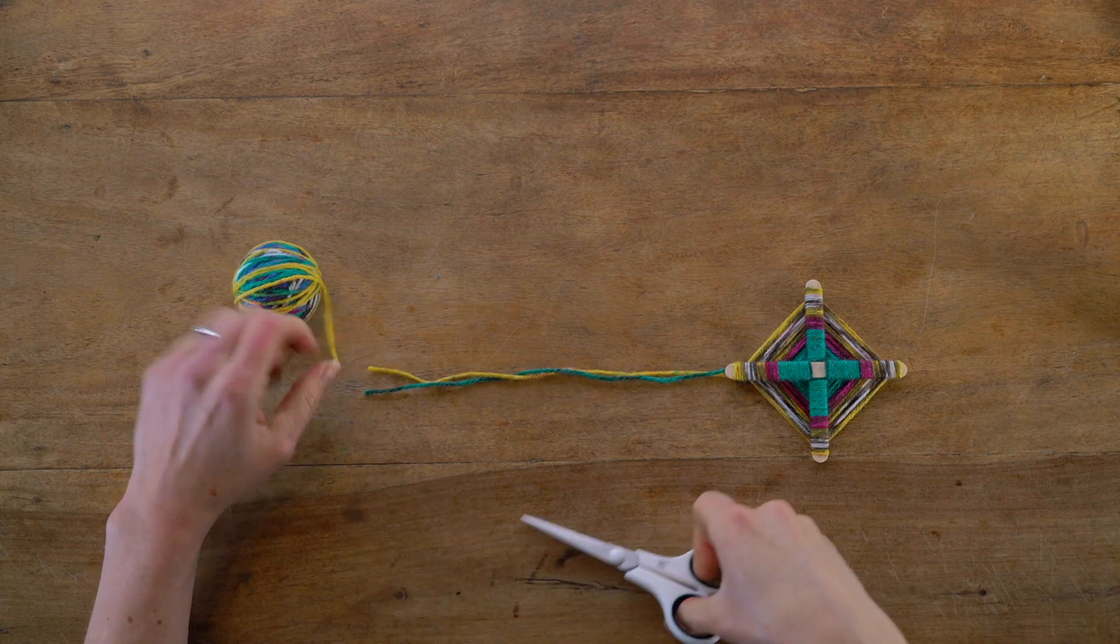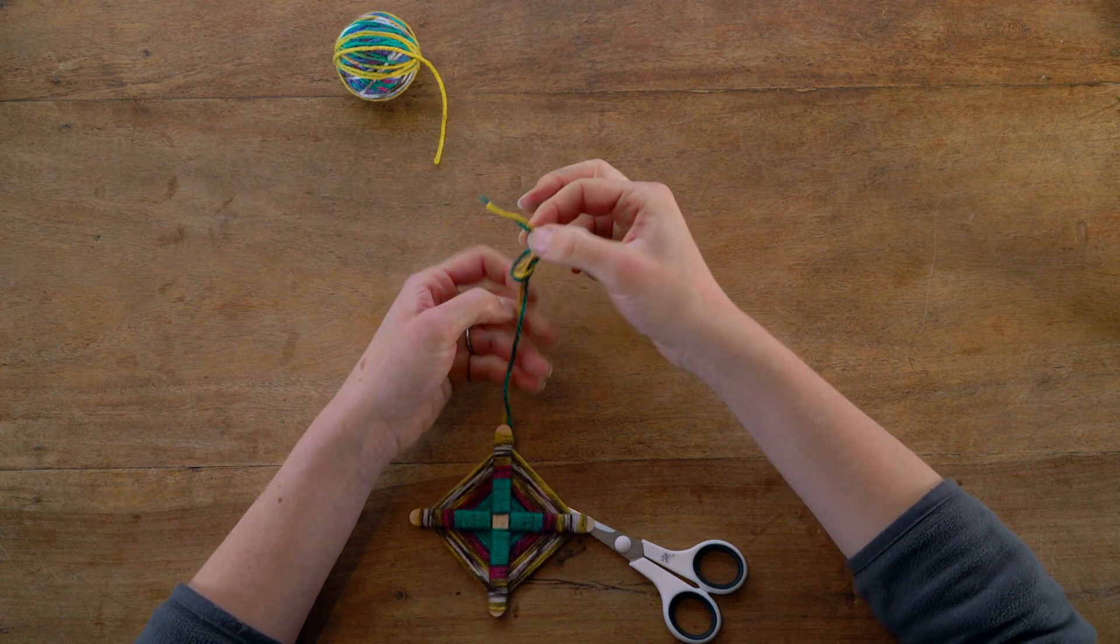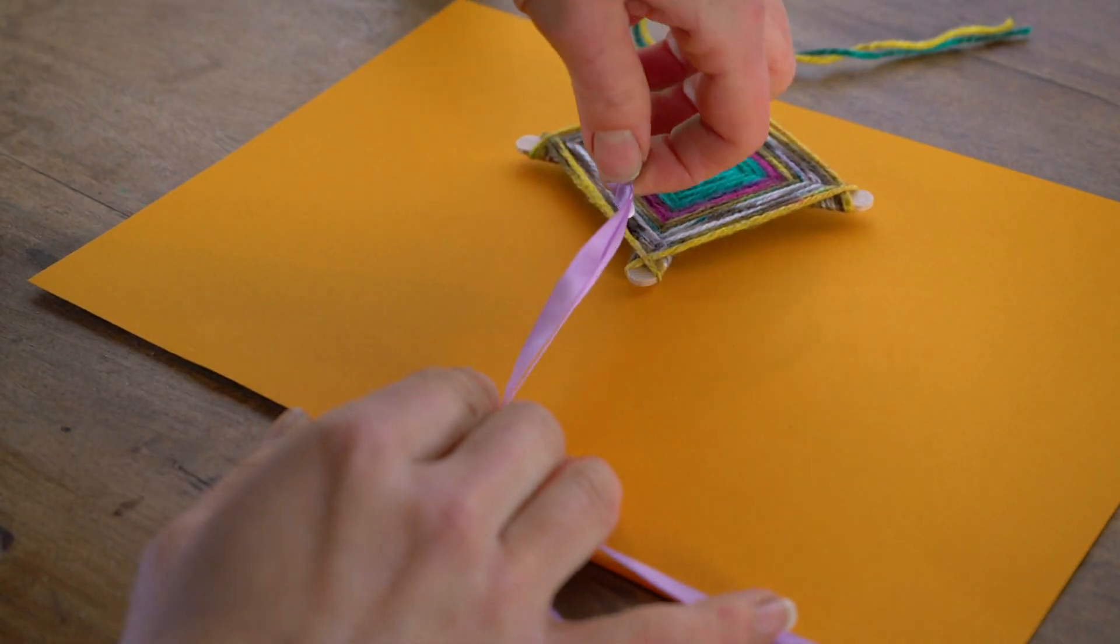Once it's finished, snip off the end and leave a tail of wool. This is what we're going to use to hang up the summer kite.